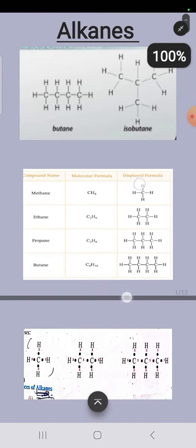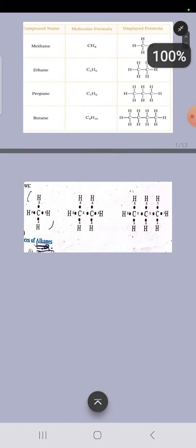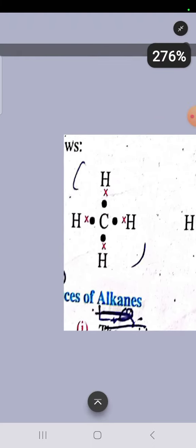Now you can see over here the dot and cross structure of alkanes. The first structure is that of methane. In this, the valence electrons of carbon atom are represented by dots and the valence electrons of hydrogen are represented by crosses. Sharing of electrons is shown in this structure, that's why it is called electronic or dot and cross structure.